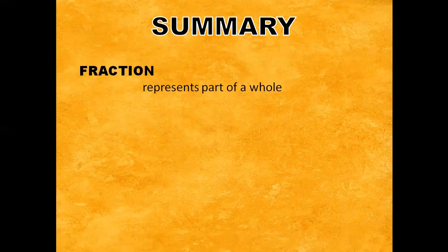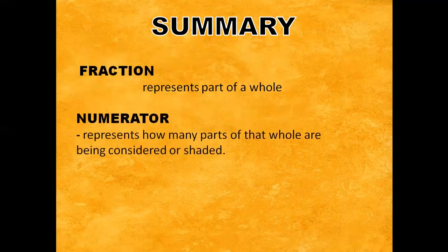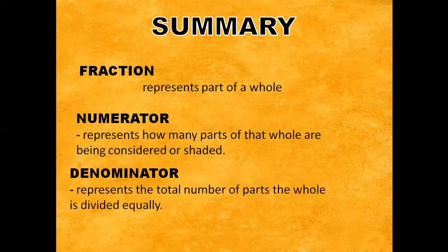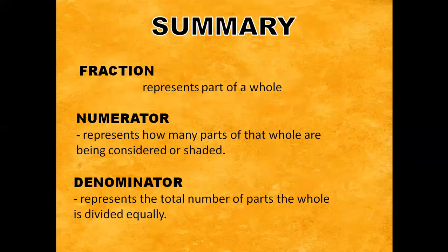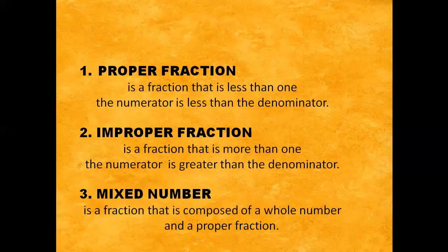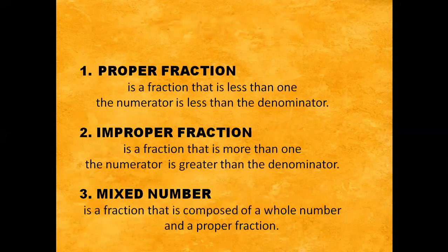Always remember that a fraction represents part of a whole. The numerator represents how many parts of that whole are being considered or shaded. The denominator represents the total number of parts the whole is divided equally. Proper fraction is a fraction that is less than one — the numerator is less than the denominator. Improper fraction is a fraction that is more than one — the numerator is greater than the denominator. Mixed number is a fraction that is composed of a whole number and a proper fraction.